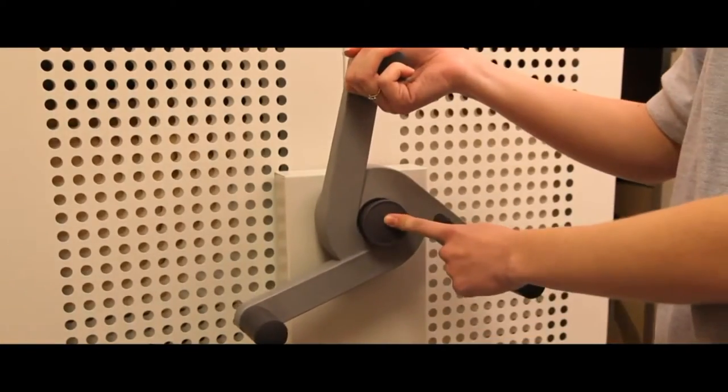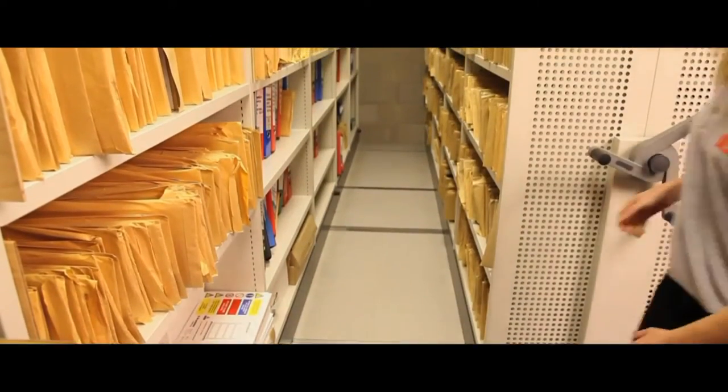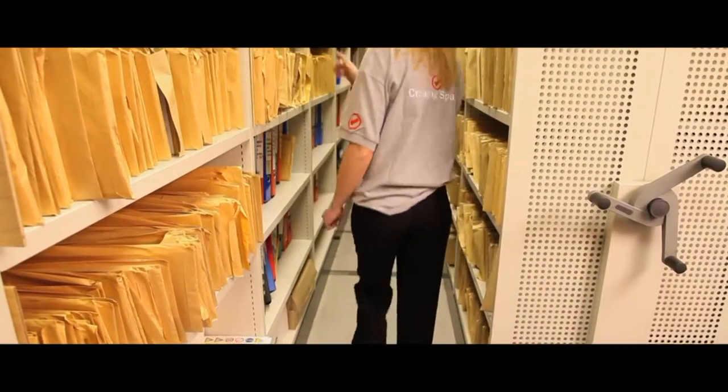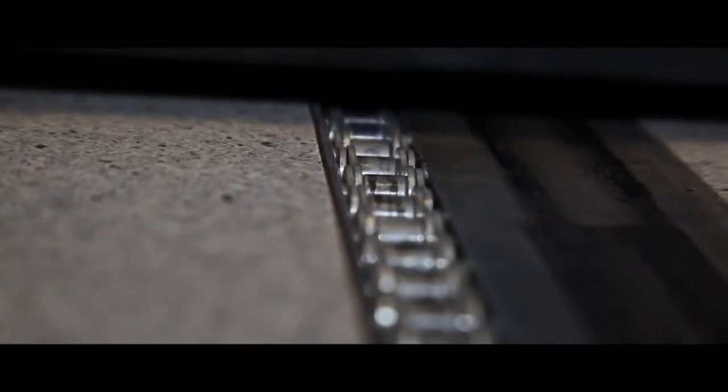Using a compactus mobile system you can move several bays and runs of shelving in easy turns of the hand crank, thanks to the heavy duty chain driven system, fitted flush within the floor.